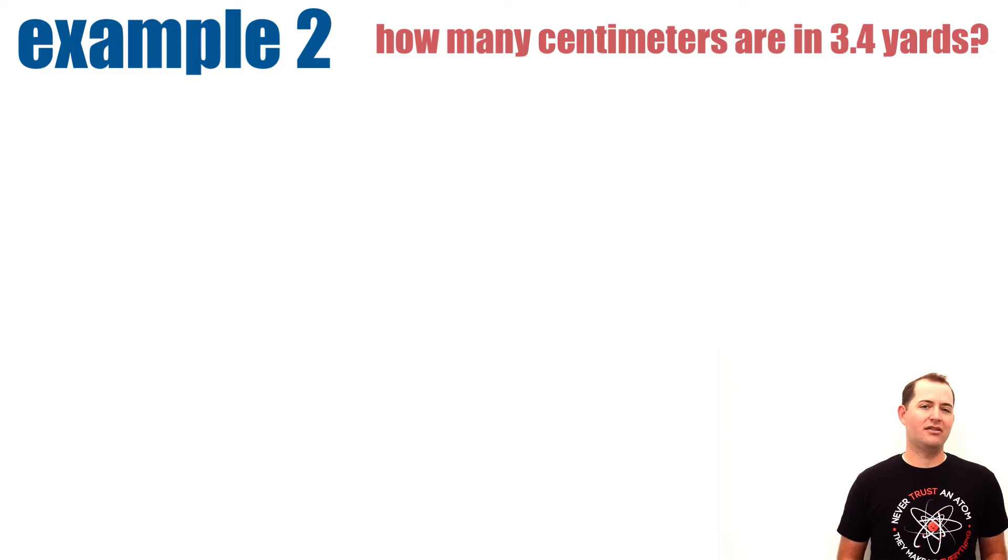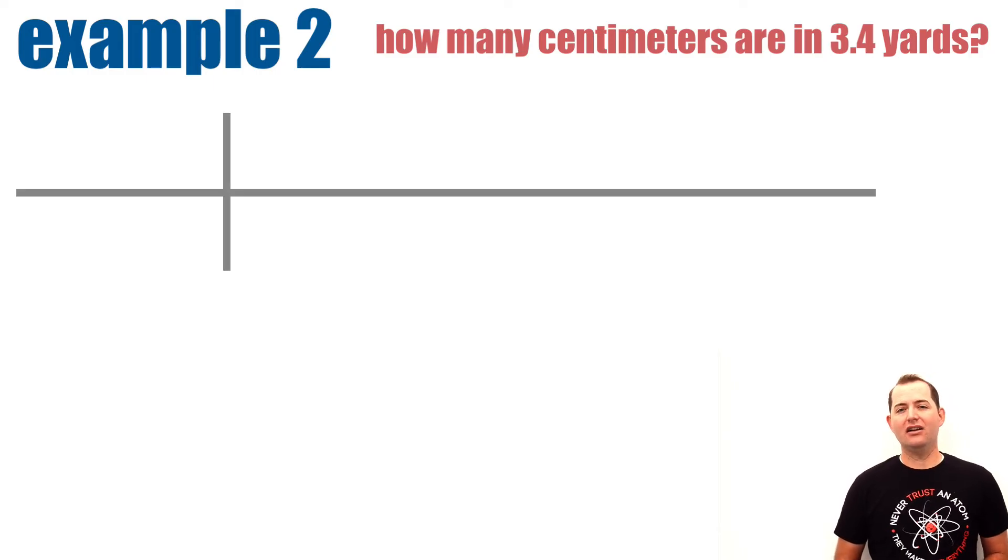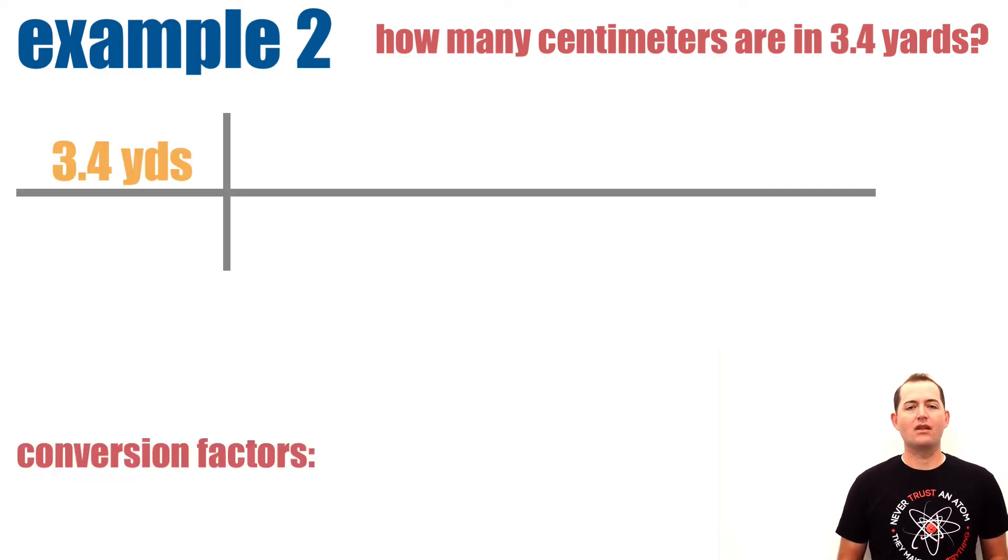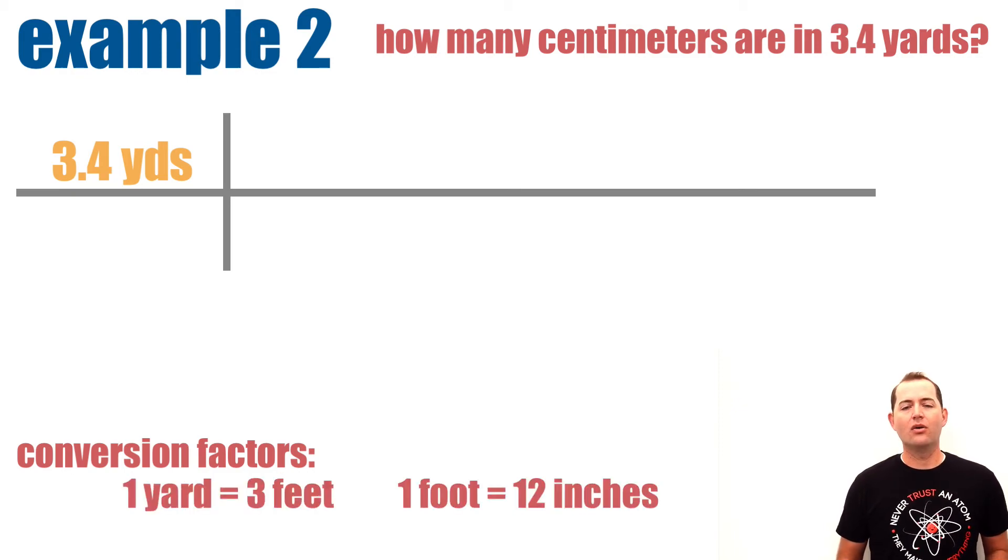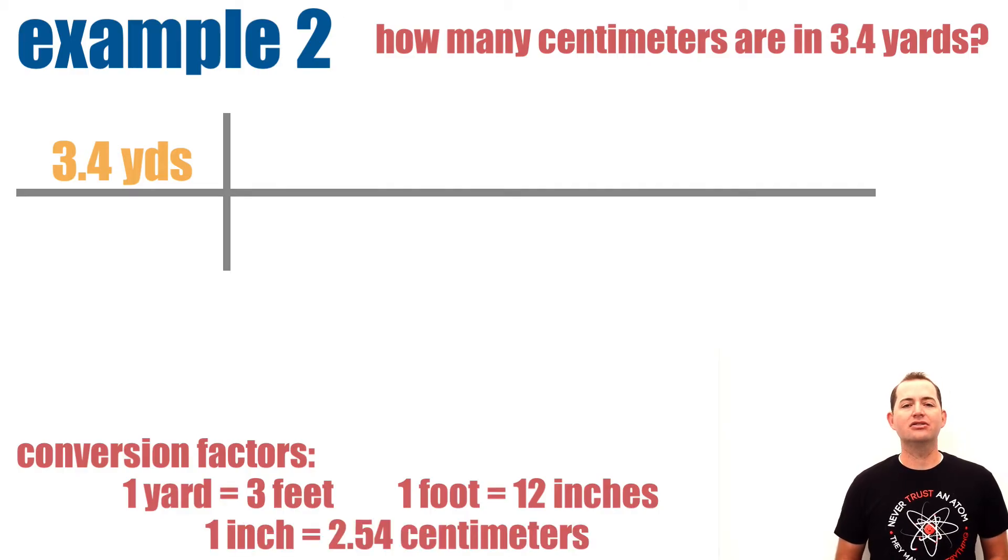Let's look at a second example that has additional steps or additional conversion factors. We want to know how many centimeters are in 3.4 yards. First, we know that we're starting with 3.4 yards. We also know that 1 yard is equal to 3 feet, 1 foot is equal to 12 inches, and 1 inch is equal to 2.54 centimeters.